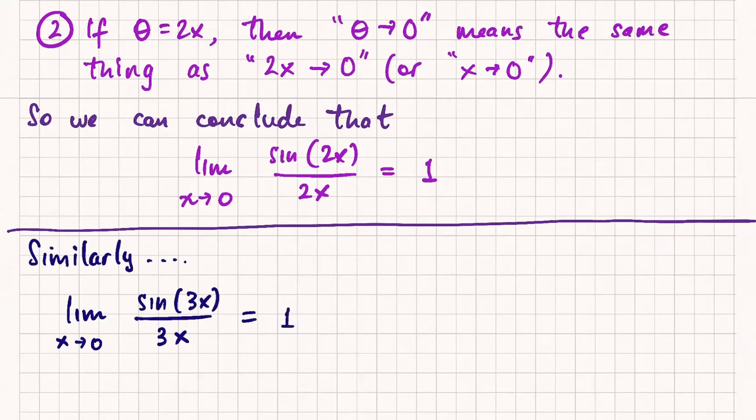1, right. Exactly. The 2 didn't really matter. All that really mattered was the two things, let's concentrate on this. The same thing, whatever is inside sine is outside sine. I have a theta inside and a theta outside. And that thing is going to 0. That's all that mattered. So the 3x, it doesn't matter.